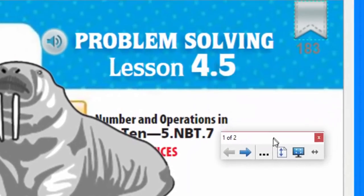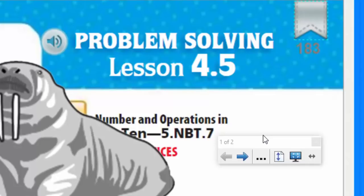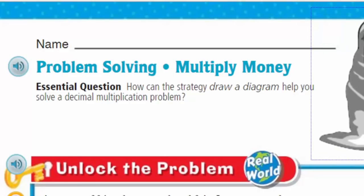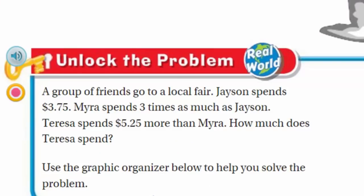Anyway, let's get down to math. We're doing Go Math 4.5, problem solving. We're going to be doing problem solving involving multiplying money — who can't use a little extra cash? The essential question is: how can the strategy 'draw a diagram' help you solve a decimal multiplication problem? Drawing a diagram is pretty key here, and it's going to help us today. Let's go ahead and unlock the problem.